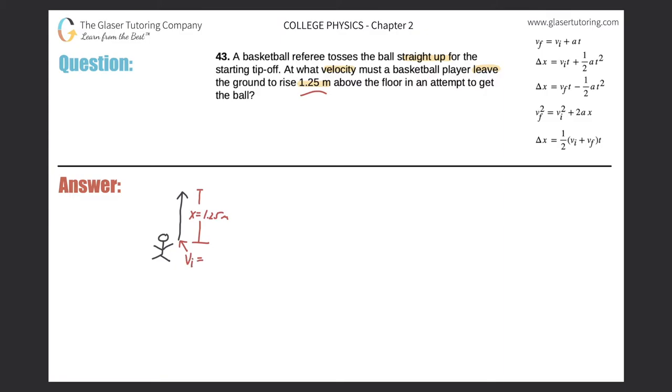They want us to figure out, at this point as soon as he leaves the ground, what is the initial velocity at which he has to impart to himself in order to jump the 1.25 meters. It almost sounds like we don't have enough information, but we have to make assumptions.